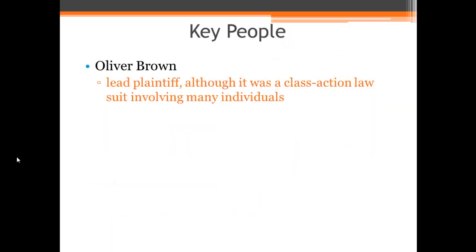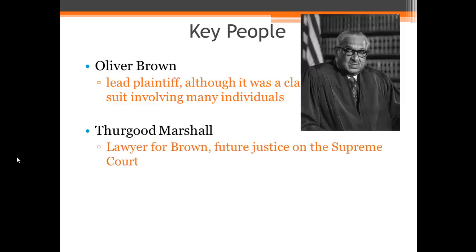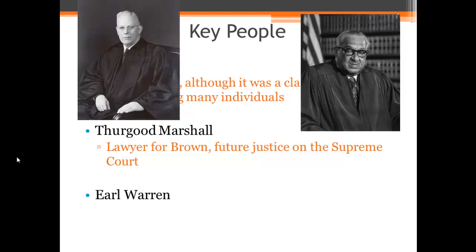Key people: We have Oliver Brown, who is the lead plaintiff, although this is a class action lawsuit involving many different individuals combining several different court cases into one. Thurgood Marshall was the lawyer for Brown — he worked for the NAACP and became a future justice on the Supreme Court, the first African American to serve on the Supreme Court. And Earl Warren is the Chief Justice of the Supreme Court during this time. This court is often known as the Warren Court, which lasted from 1953 to 1969, and many key decisions were made during this period.